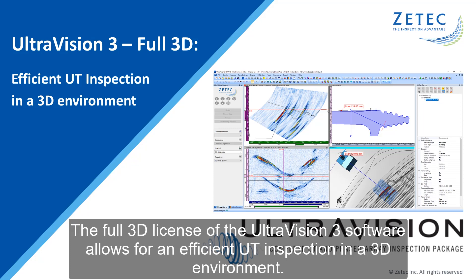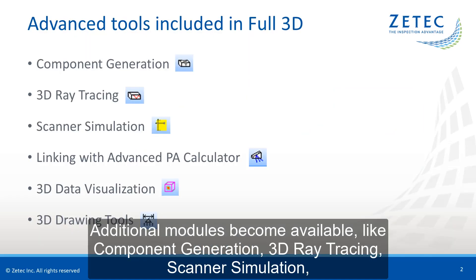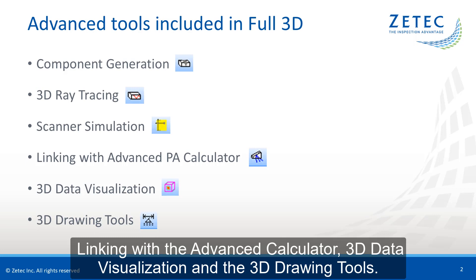The full 3D license of the UltraVision 3 software allows for an efficient UT inspection in the 3D environment. Additional modules become available like component generation, 3D ray tracing, scanner simulation, linking with the advanced calculator, 3D data visualization, and the 3D drawing tools.